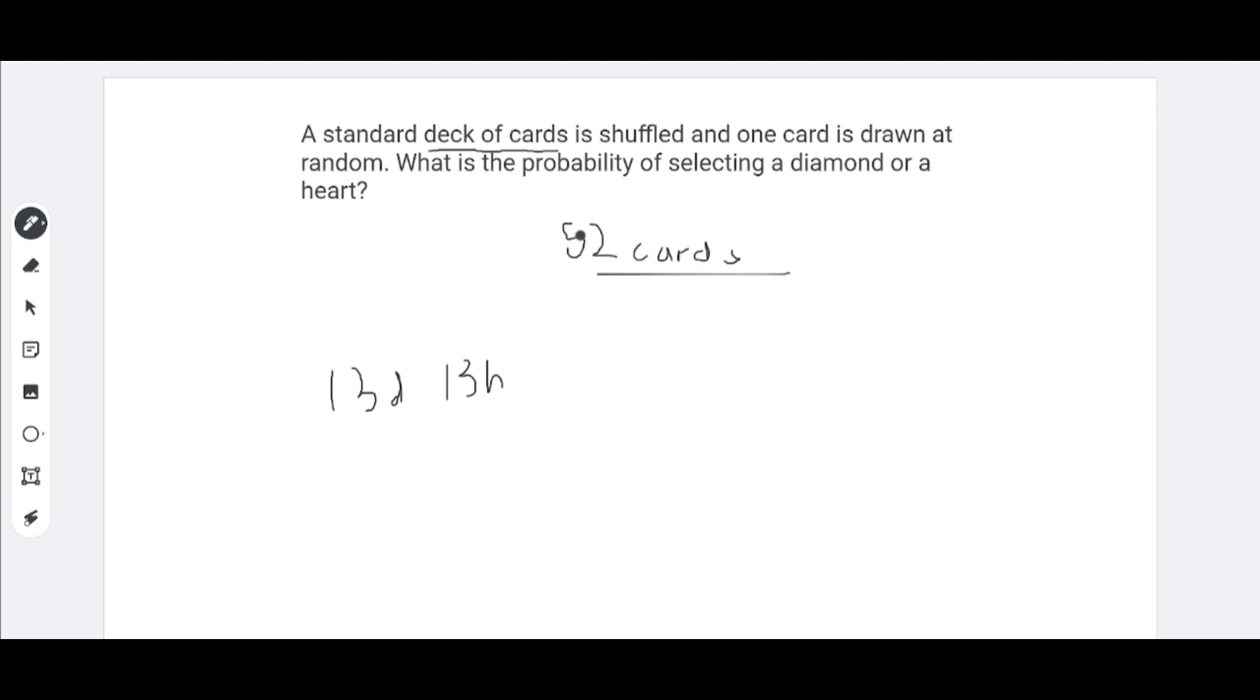So, if we add 13 and 13, we'd get 26 cards out of 52 cards that qualify for being a diamond or a heart. Simplifying this, we would get 1 half. Let's move on to the next problem.